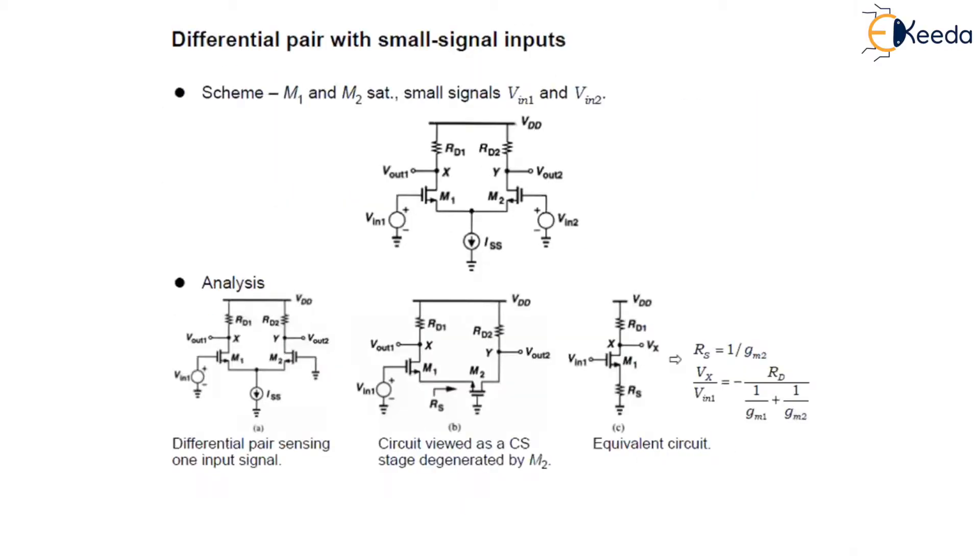Now, we have already seen that the differential voltage gain Vout1 minus Vout2 upon Vin1 minus Vin2 equals under root of mu n cox ISS W by L into Rd. This expression of voltage gain reduces to GmRd, where Gm is the transconductance of M1 and M2.